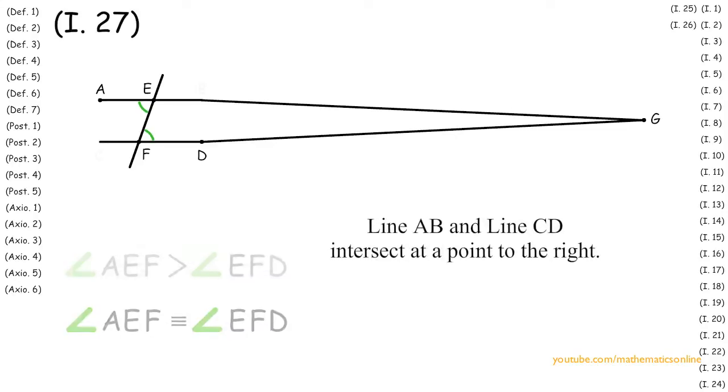The reason we have this contradiction is because we assumed that line AB and line CD intersect at a point when extended to the right. So this statement must be false.